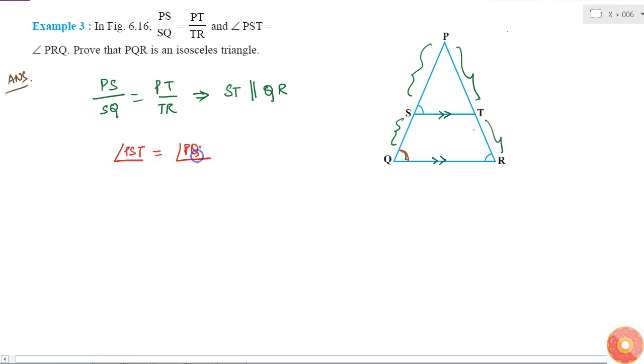So what does this mean? But I am also given that angle PSD is equal to PRQ. That is, angle PRQ is equal to angle PQR. So if two angles in a triangle are equal...